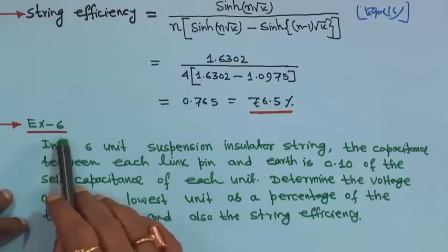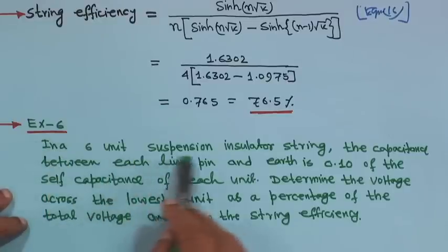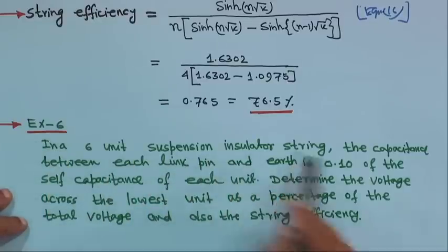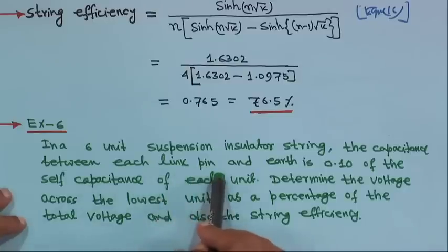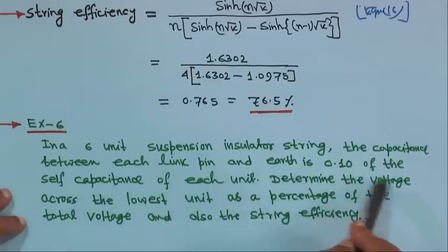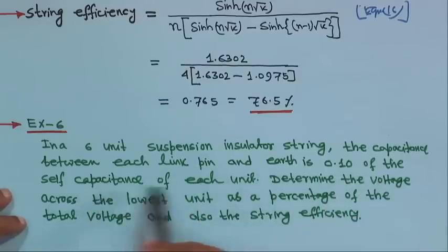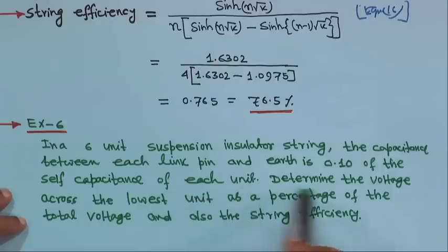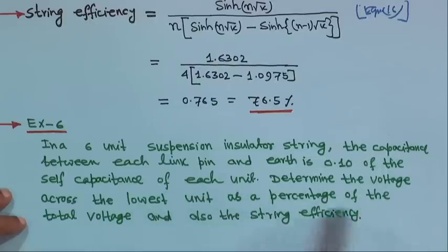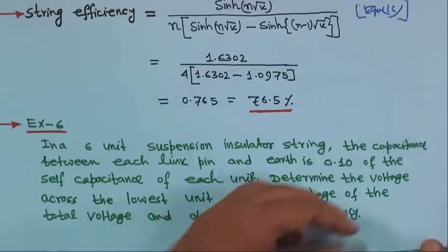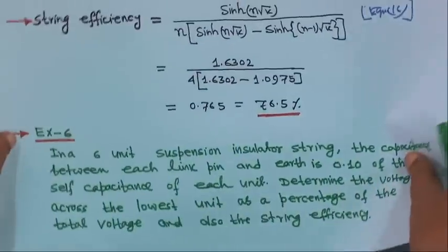Next we will come to example 6. In a 6-unit suspension insulator string, the capacitance between each link pin and earth is 0.10 of the self-capacitance of each unit. You have to determine the voltage across the lowest unit as a percentage of the total voltage, and also the string efficiency.